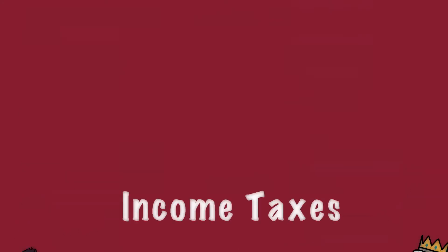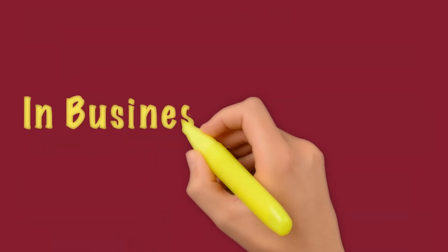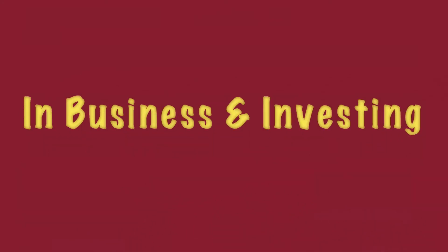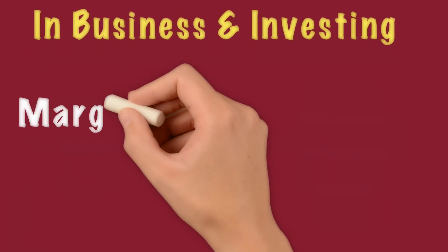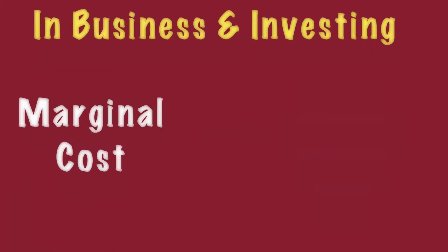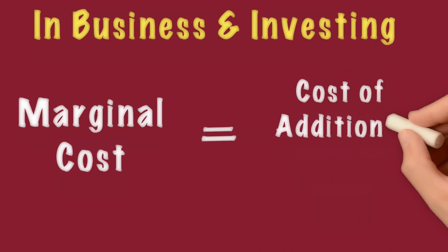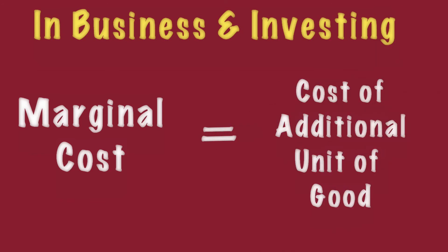Where do we see this mental model in the world of business and investing? Asking how many donuts you should eat is very similar to asking how many units of goods a manufacturer should produce. That's where the idea of marginal cost comes into picture. Marginal cost is the cost of producing one more unit of a good. A manufacturer should keep producing unless the marginal revenue from each unit is more than the marginal cost of production — assuming, of course, that all products can be sold.